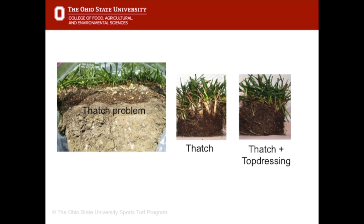Top dressing helps to control thatch by diluting it, which means the top dressing soil mixes with the thatch. Organisms in the soil can now decompose the thatch, but most importantly the thatch is diluted so that it is not a discrete spongy layer at the top of the soil. This picture shows a thatch problem on the left. The picture in the middle shows a core sample with a thatch layer. The picture on the right shows the same turf top dressed. Notice how the thatch is mixed with the soil and how well the crowns or the bottom parts of the grass plants are protected. The actual amounts of thatch in these two samples is the same, but the thatch on the right has been diluted.